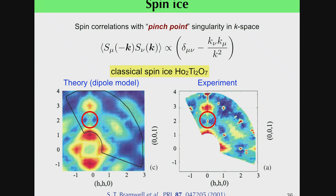This pinch point can be observed by elastic neutron scattering experiments. This is an elastic neutron pattern in momentum space obtained from theory using the dipole model. This is the experimental result for the classical spin-ice compound Ho₂Ti₂O₇. As you can see, the pinch-point singularity has been clearly observed in the experiments.